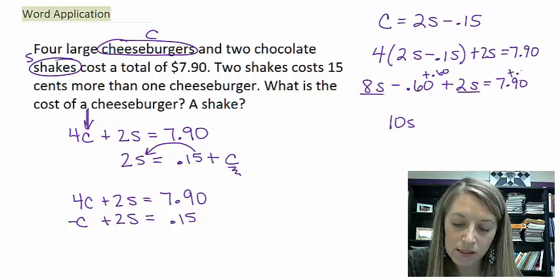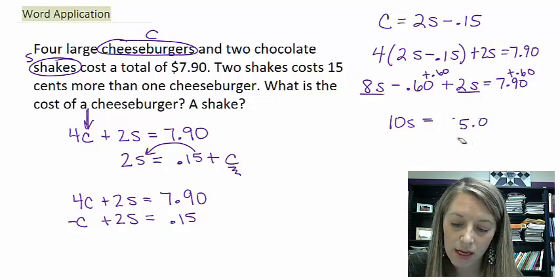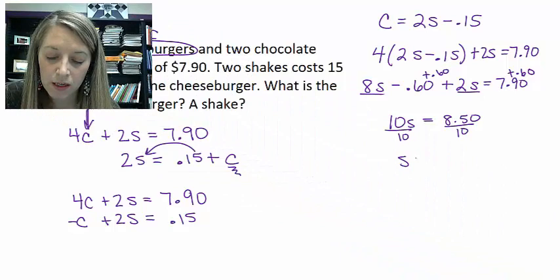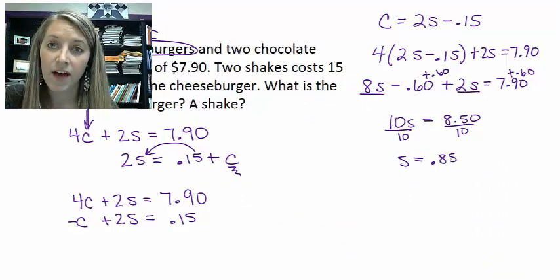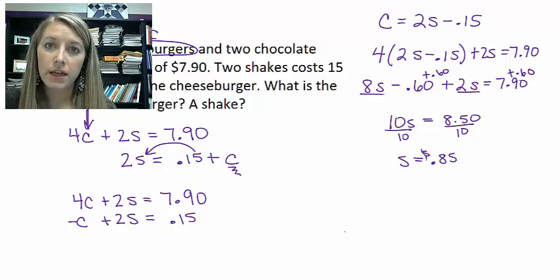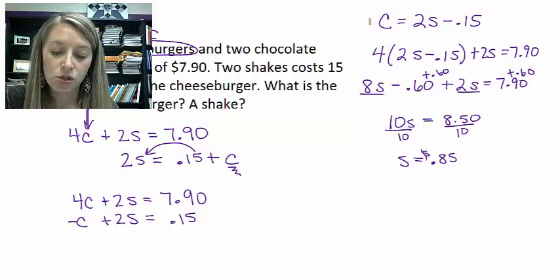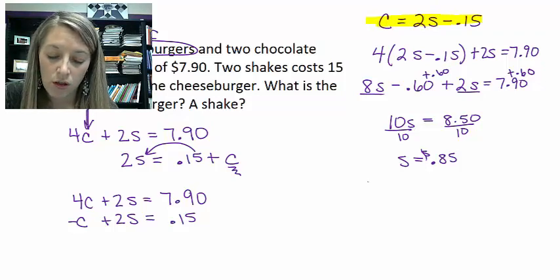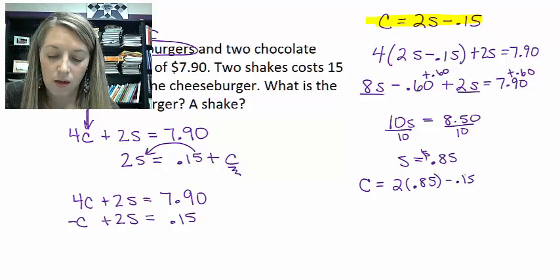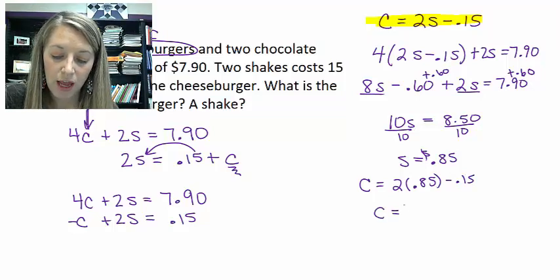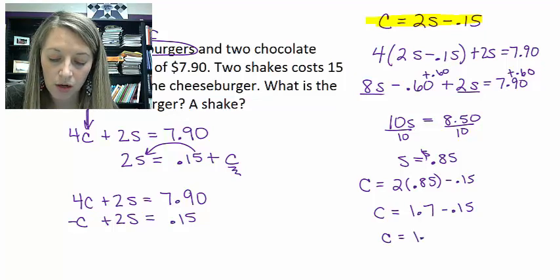Adding $0.60 to both sides gives $8.50. Dividing by 10, the cost of the shake is $0.85. Now I can substitute that back into one of the original equations to find the cost of the cheeseburger. The cost of the cheeseburger equals 2 times $0.85 minus $0.15. Two times $0.85 is $1.70, minus $0.15, gives the cost of the cheeseburger as $1.55.